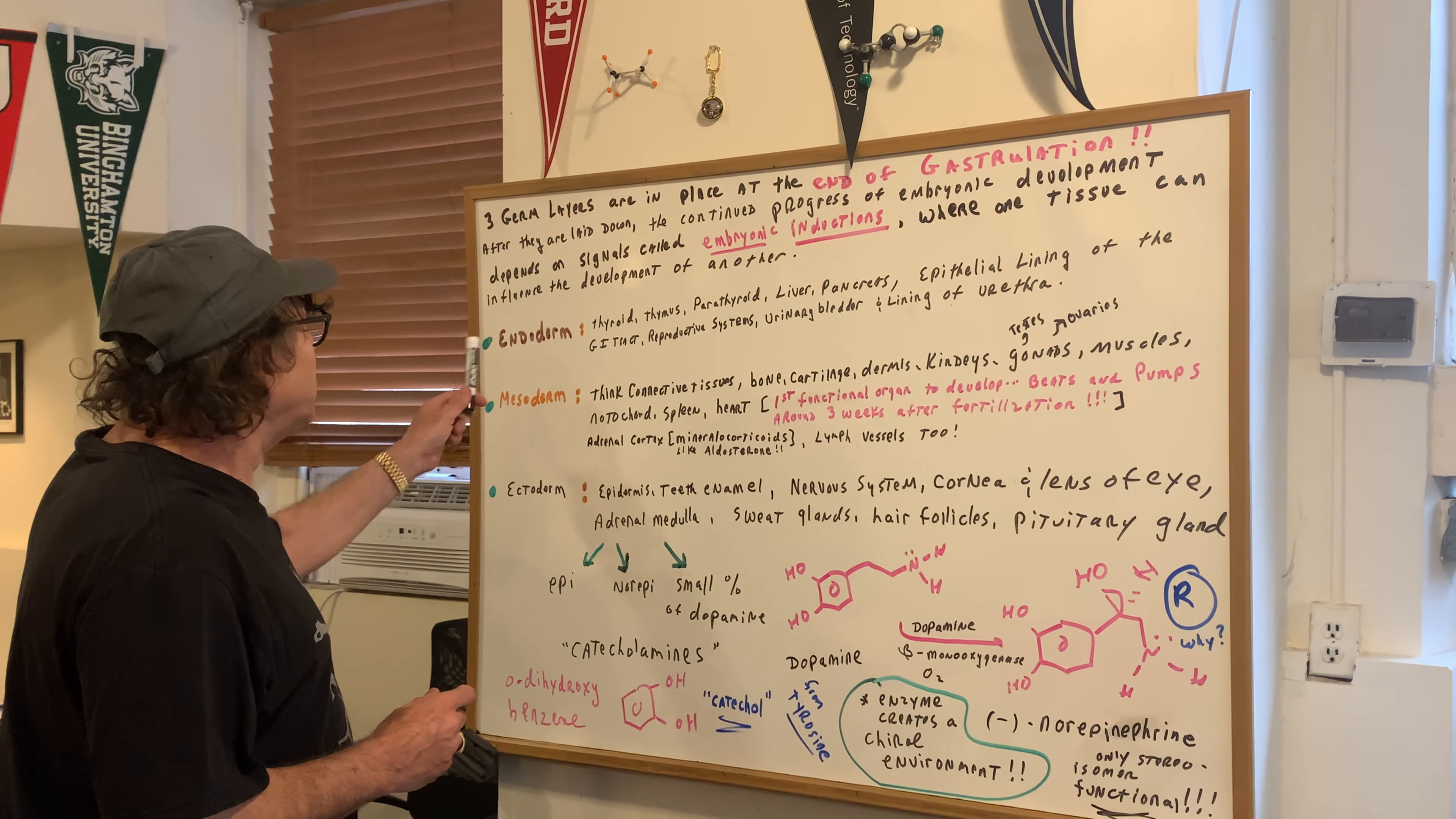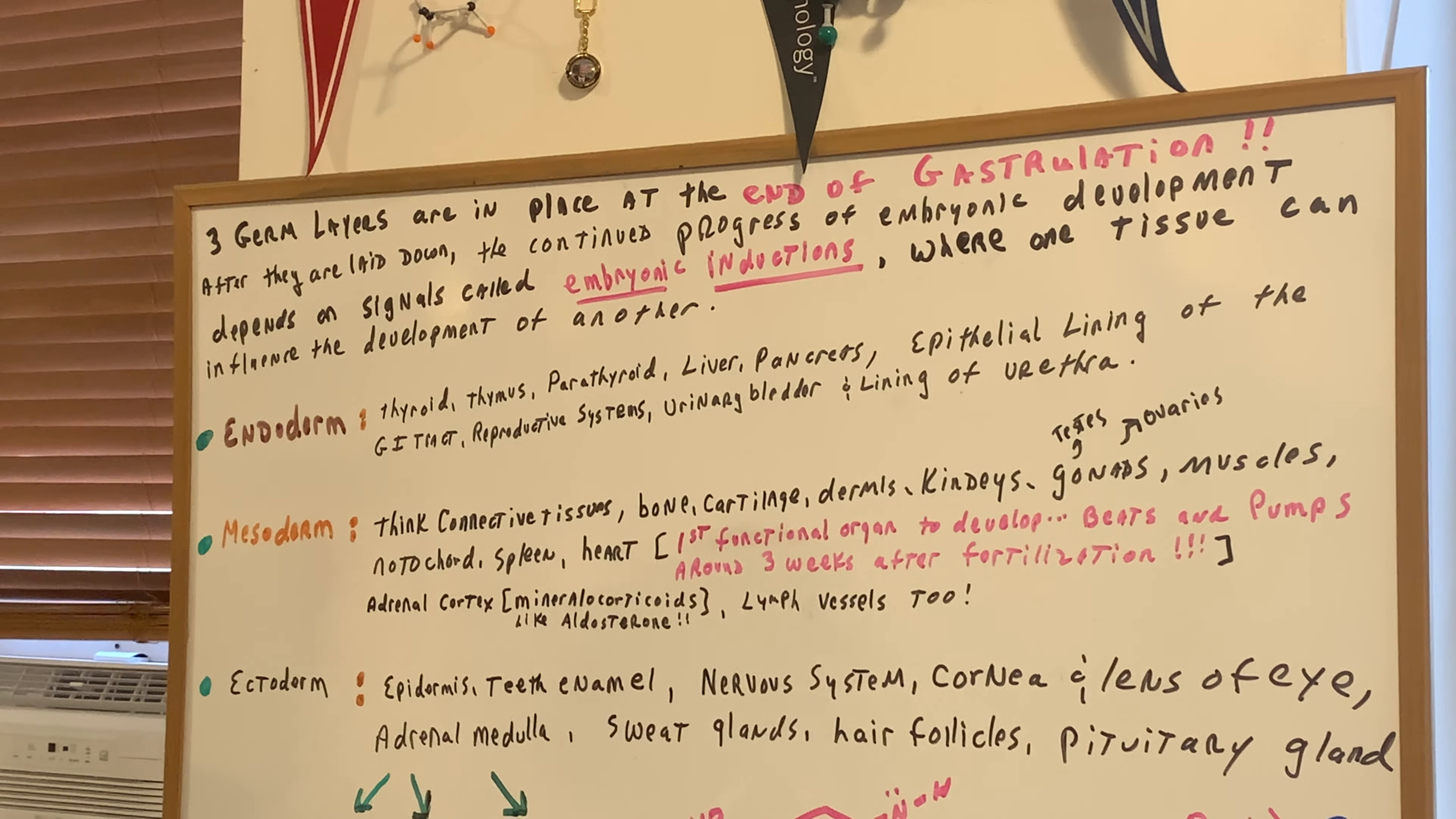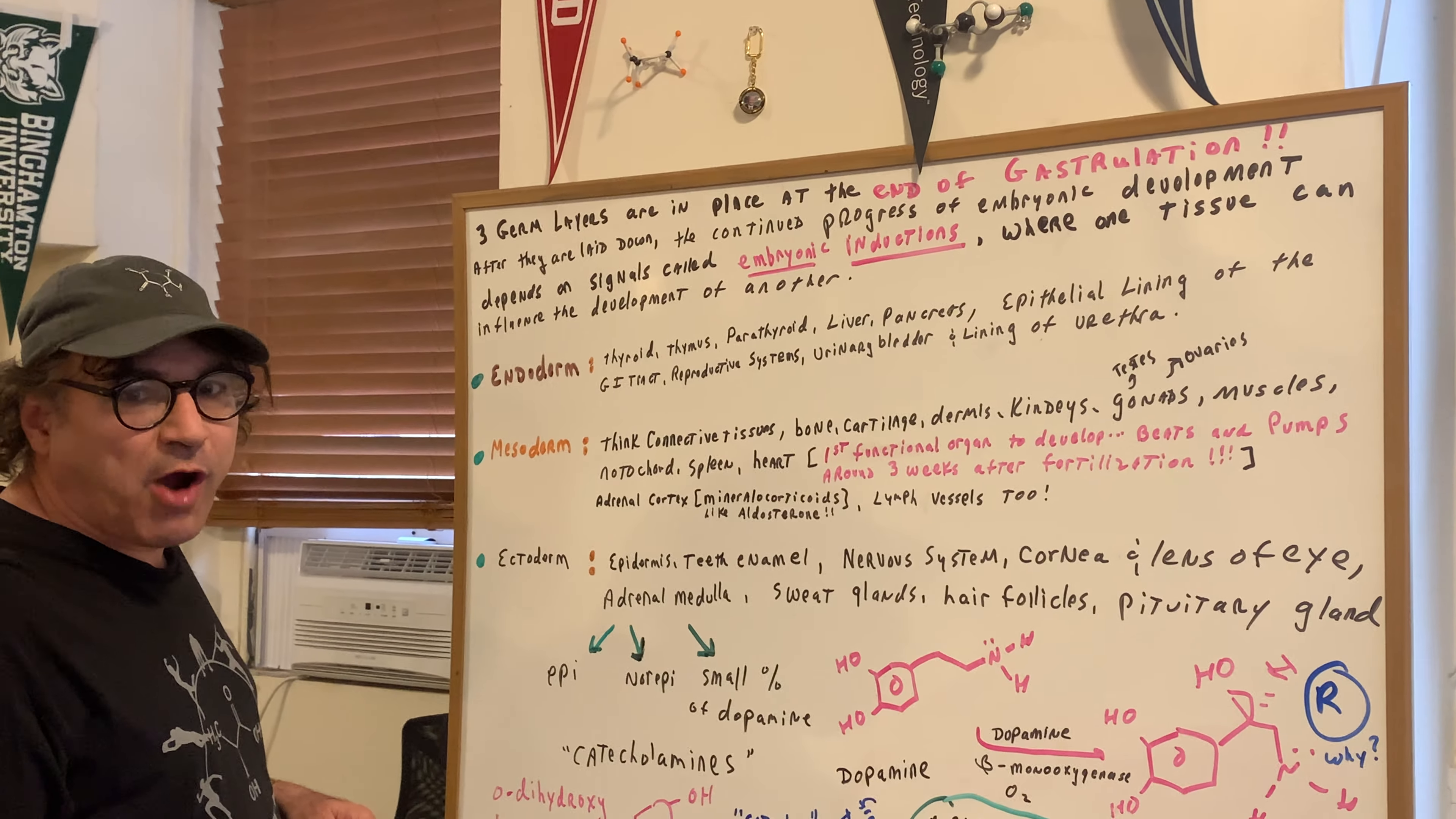The three germ layers, as you know, are the endoderm, mesoderm, and the ectoderm. These three germ layers are going to be in place at the end of gastrulation, and after they're laid down, the continued progress of embryonic development depends on signals called embryonic inductions, where one tissue can influence the development of another. Let's go through these germ layers and make sure you know each one of these and what they give rise to. That's the most commonly asked question.